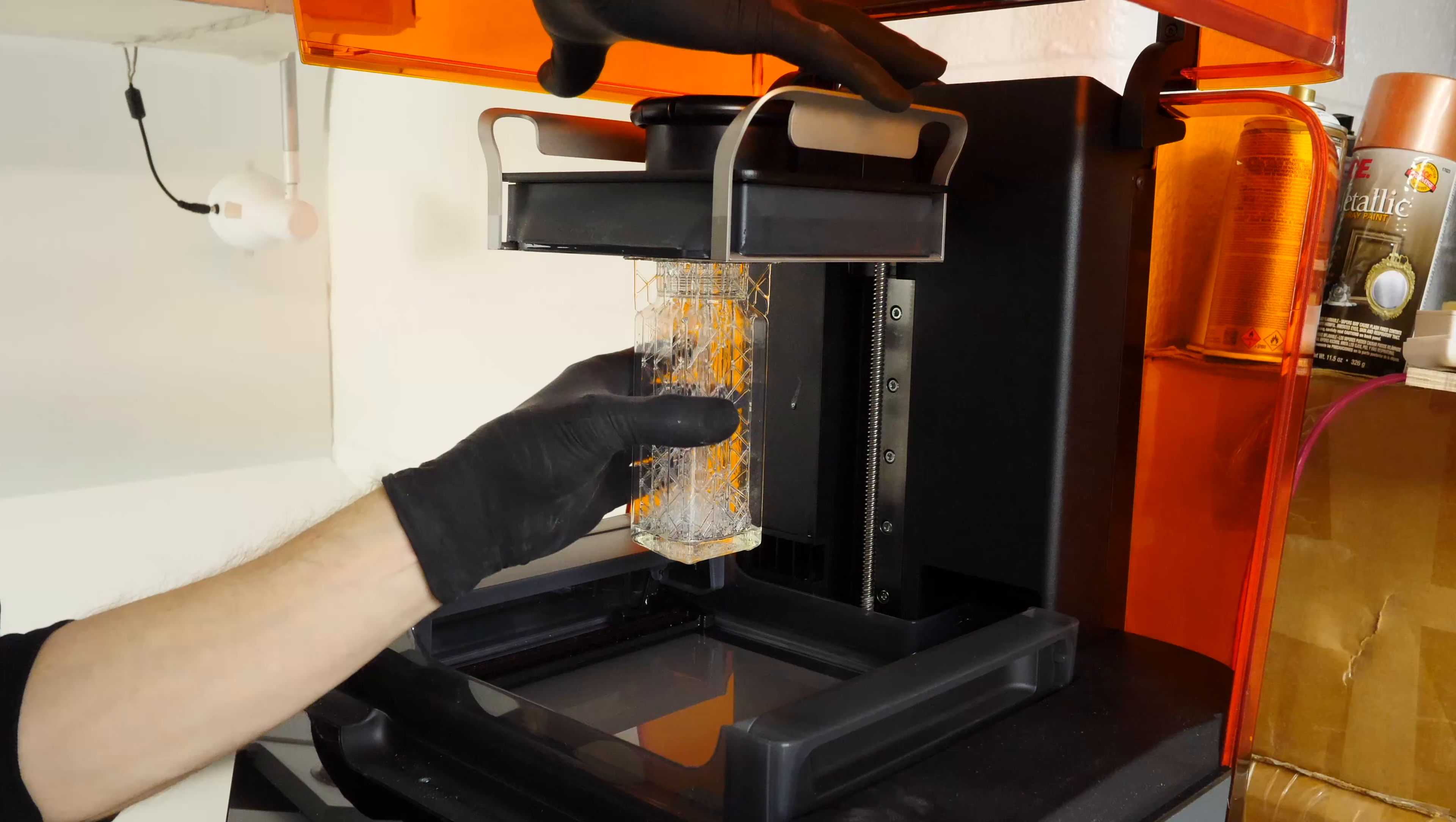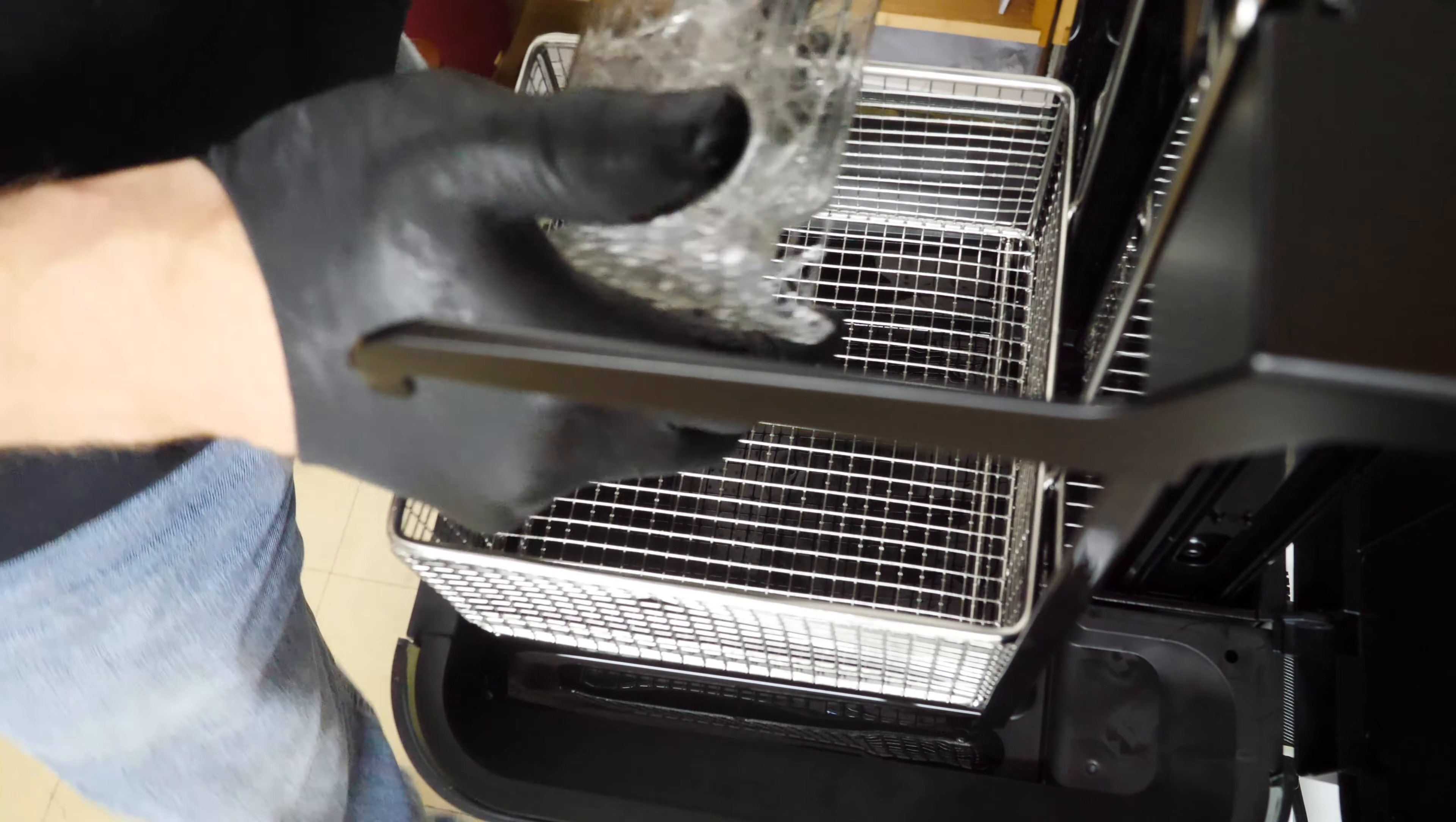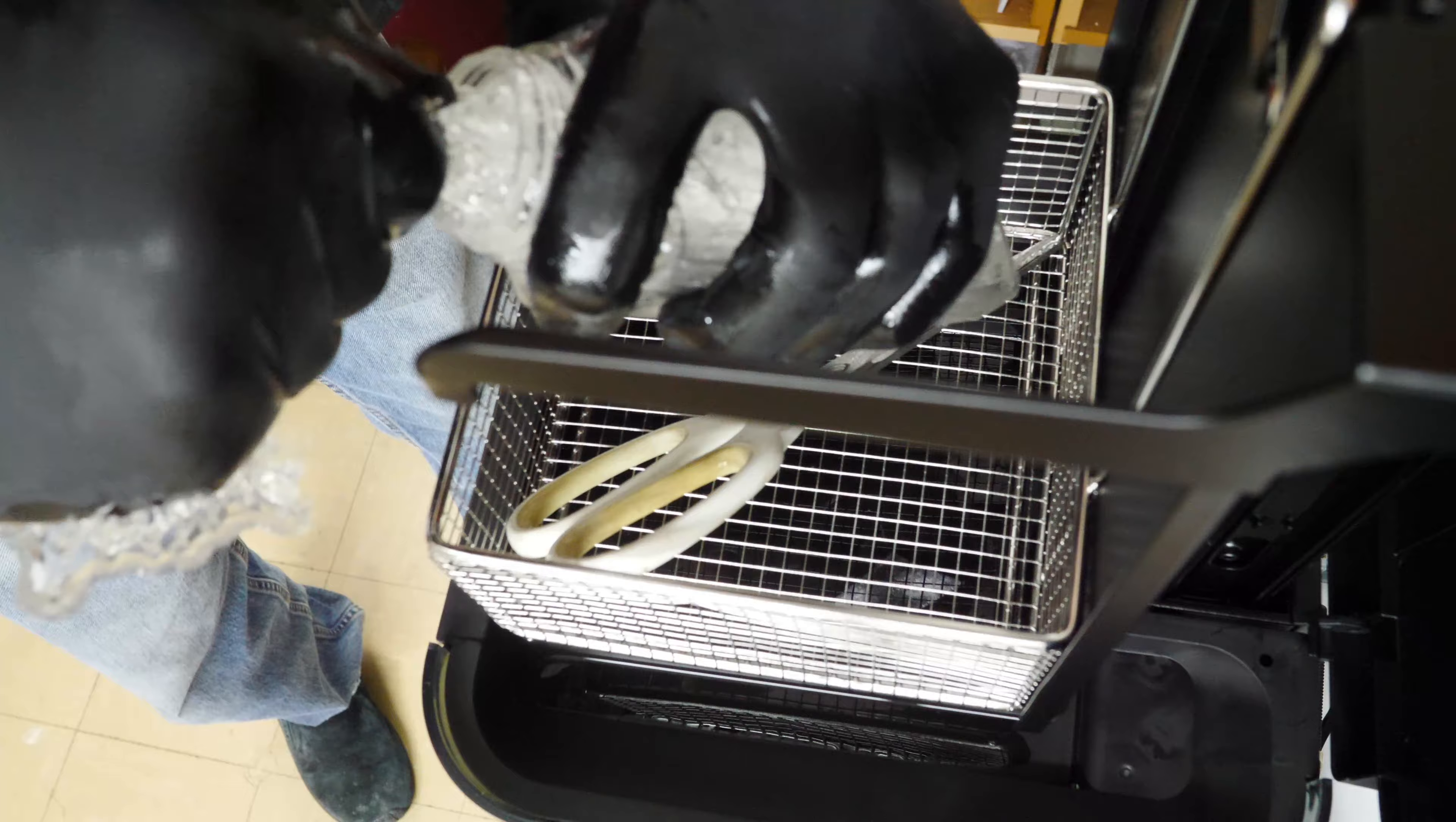My Form 3 has this really nice flexible build plate, and the parts pop right off. Drain the resin out of the bottle, and we'll break off the supports. The problem with this bottle is that the supports on the inside are a little bit wider than the opening of the bottle. So I have to cut away the supports so I can get them out.